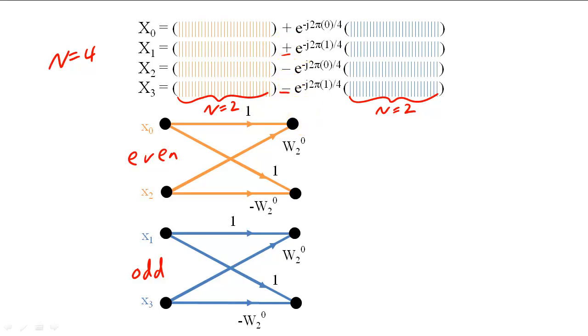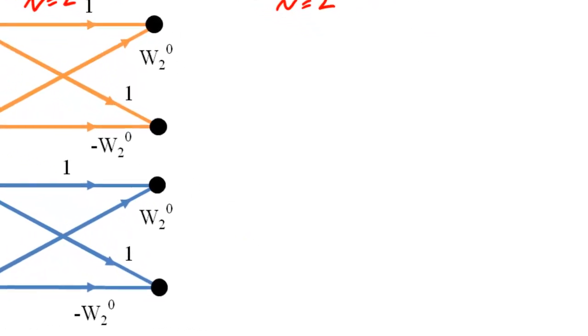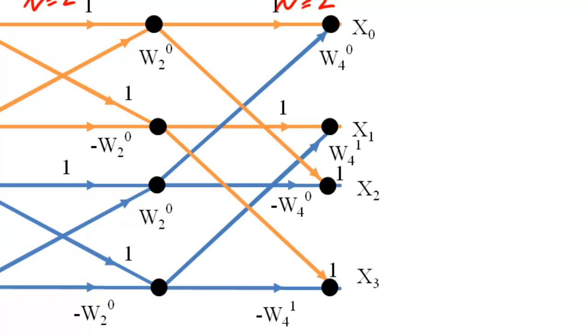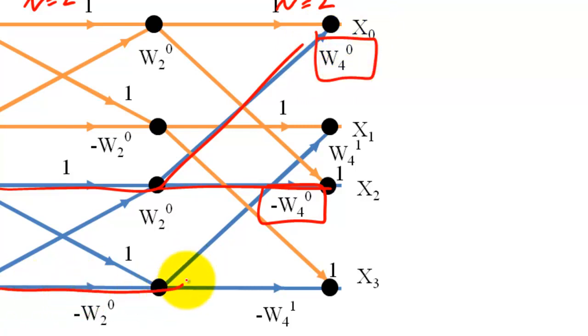We can use the similarity to construct a new butterfly structure that combines the two two-sample DFTs. This butterfly is twice as wide and multiplies the top branch of the bottom butterfly by W sub 4 raised to the 0 and the bottom branch of the bottom butterfly by W sub 4 to the 1.